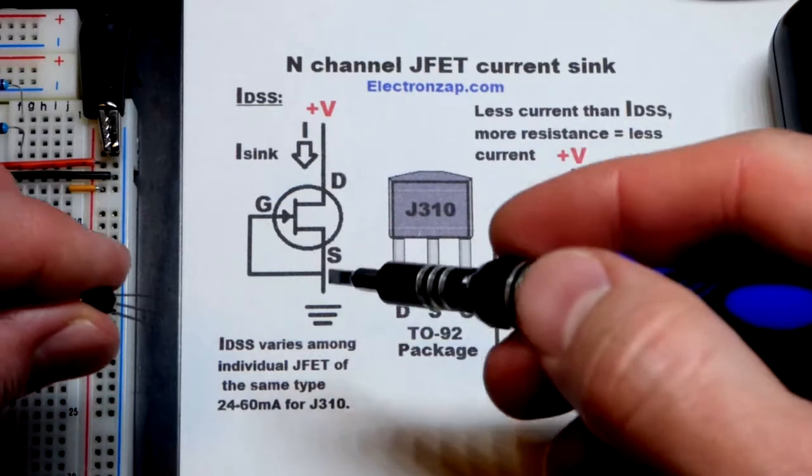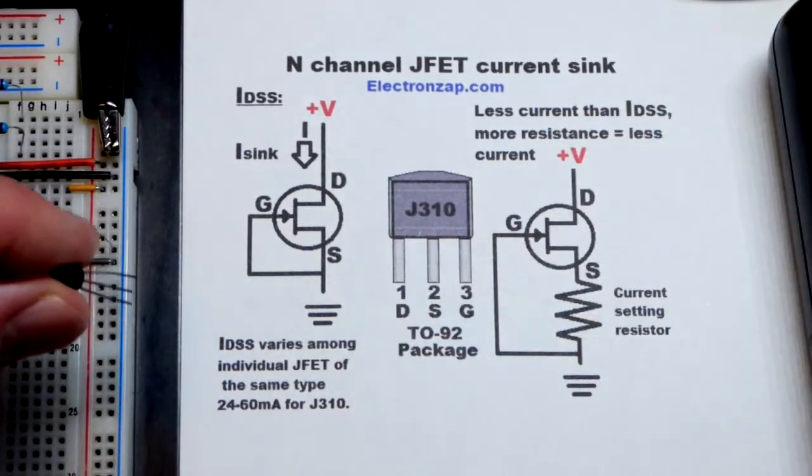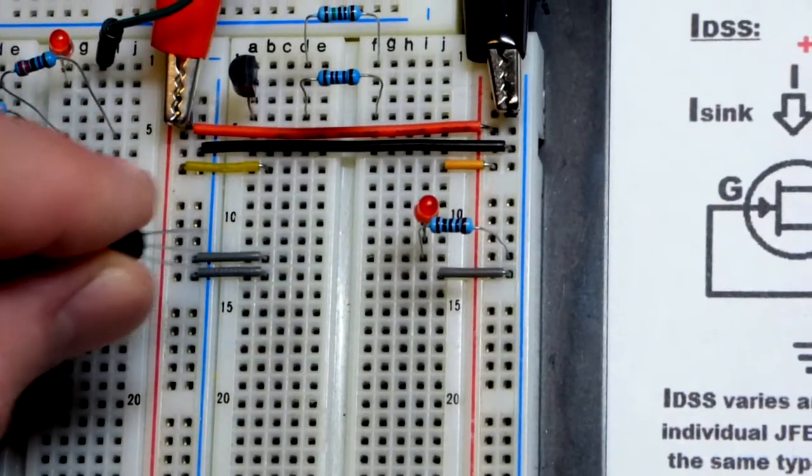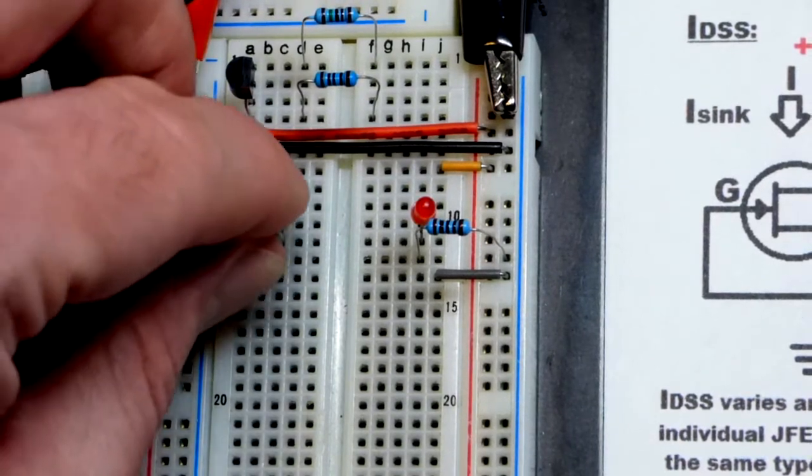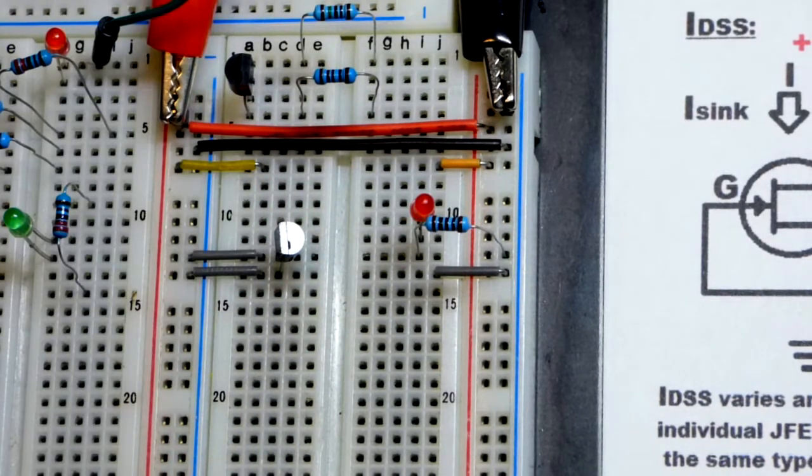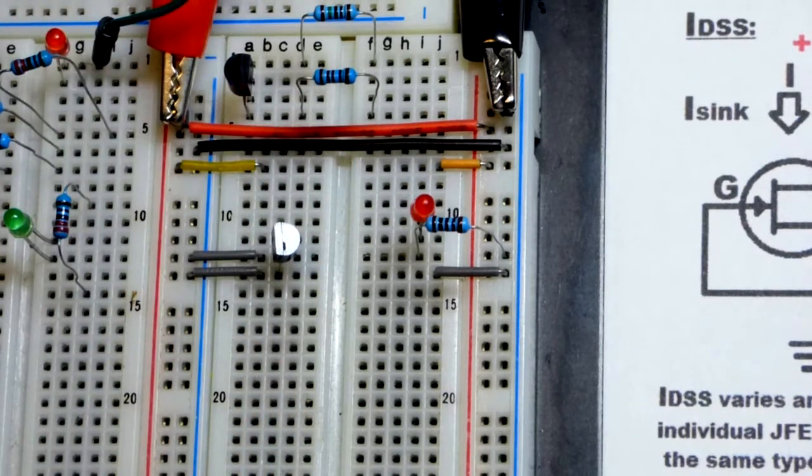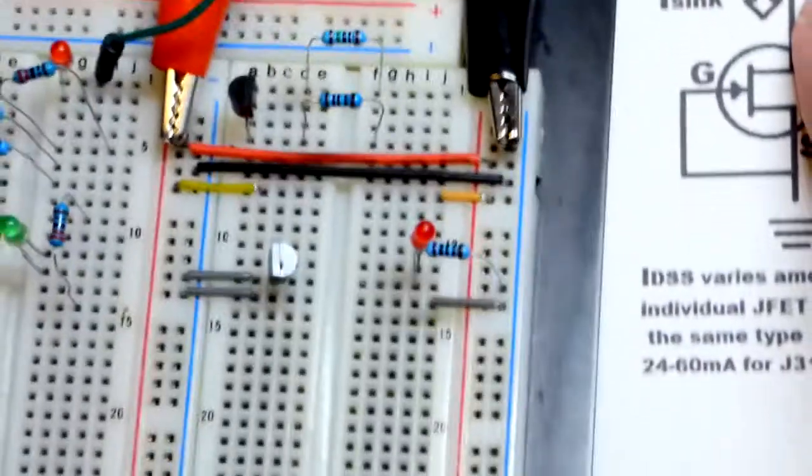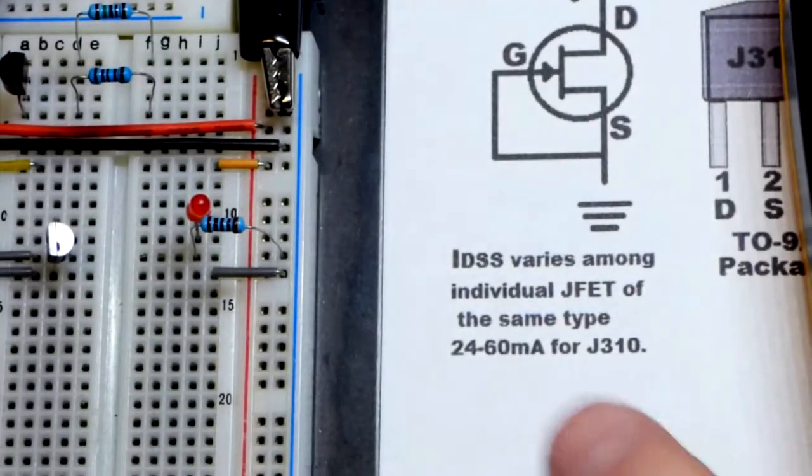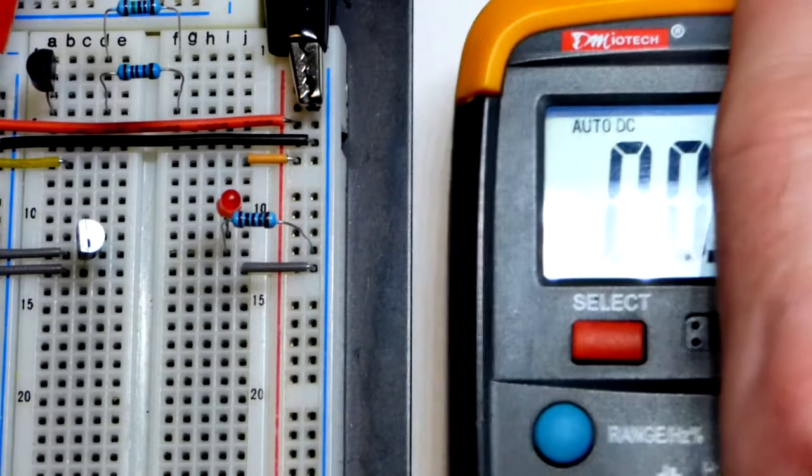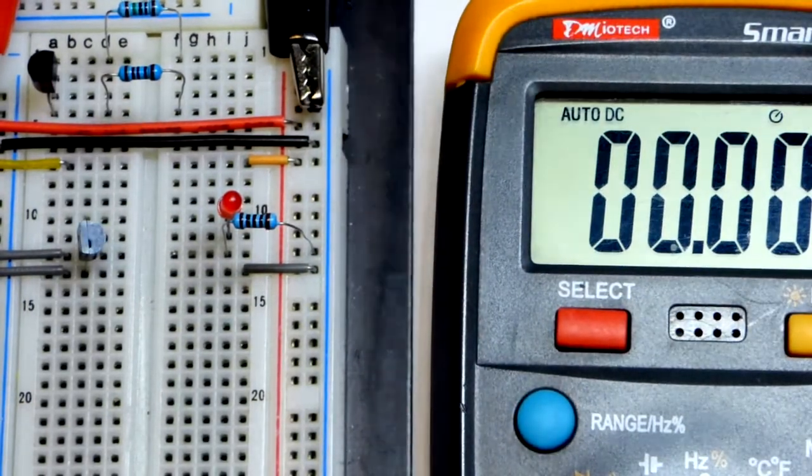Also we can add a resistor from source to ground to lower the amount of current. So we're putting the gate, the very bottom pin, to ground. The source middle pin directly to ground and the drain up here. We have a gap between there because we're going to measure the current. So this is an important number - you'll see this on data sheets but this number also is variable. So for this particular transistor we can expect somewhere between 24 to 60 milliamps of current with this test that we're going to do right now. And so that's for the J310.